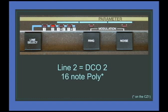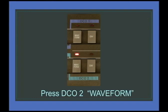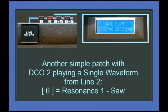To change a waveform we hit the waveform button. Here we've got waveform two which is a simple square. On line two, 16-note poly again, hit the waveform button and here we've got waveform six which is resonance one, a saw wave.